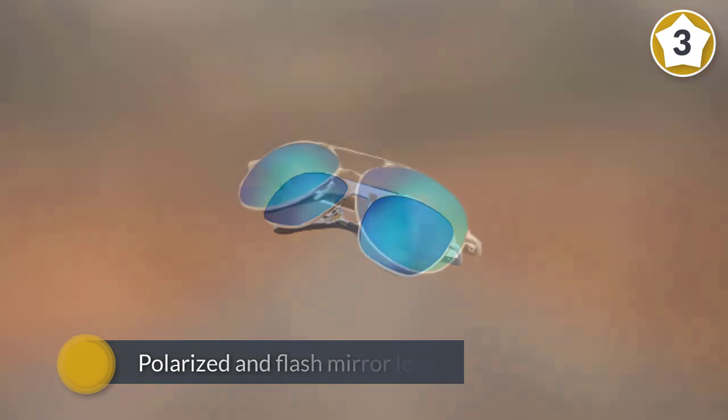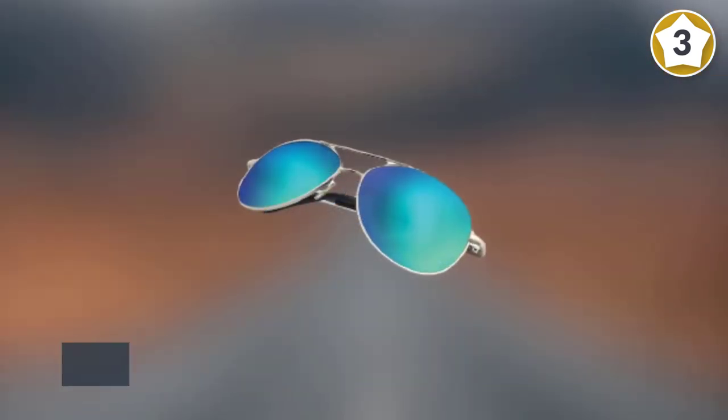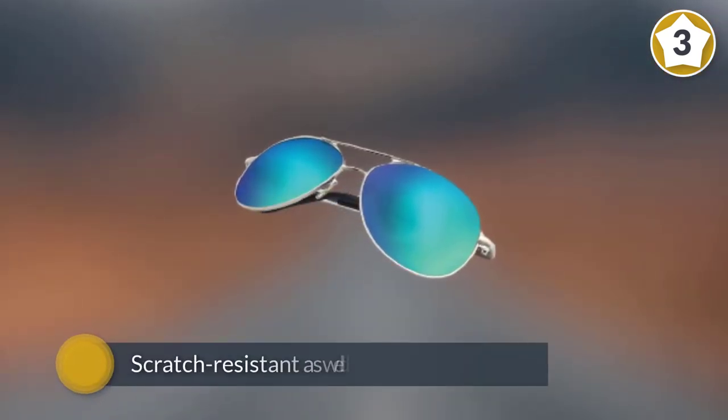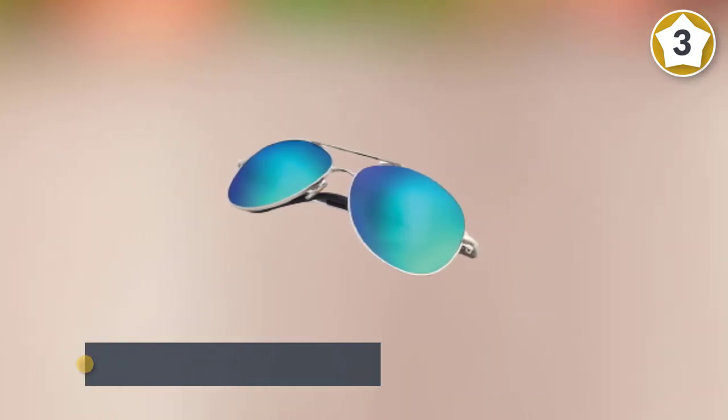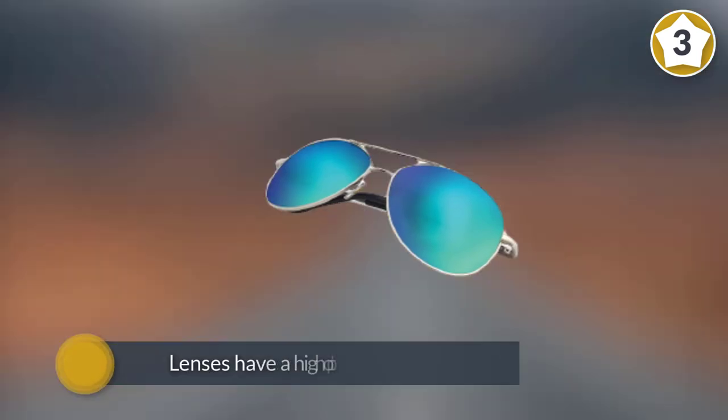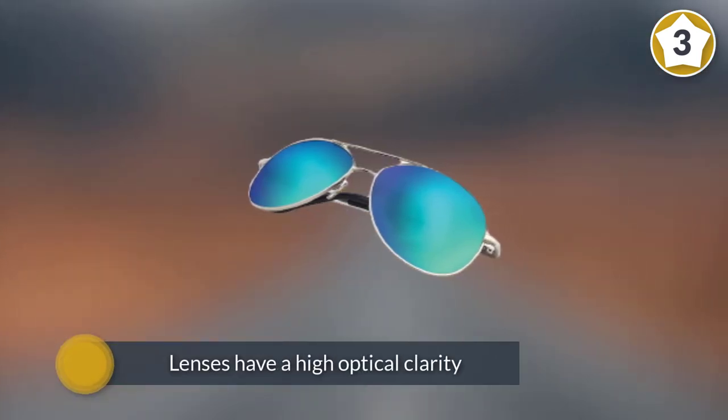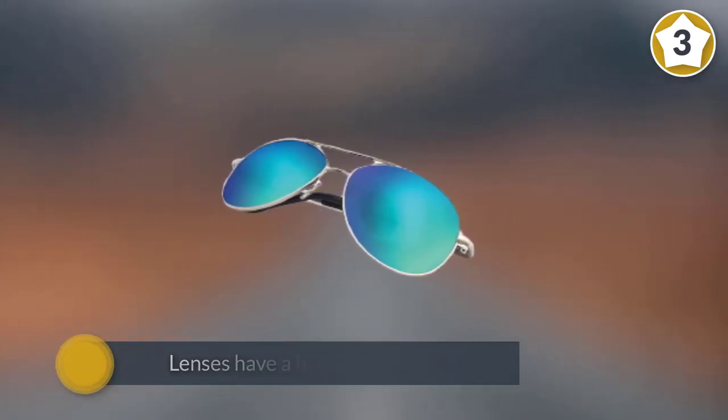The J&S sunglasses have a polarized and flash mirror lens that is lightweight and scratch-resistant as well as distortion-free, which makes them great for driving as well as outdoor activities. The lenses have a high optical clarity and an optical coating to decrease glare for better visibility.